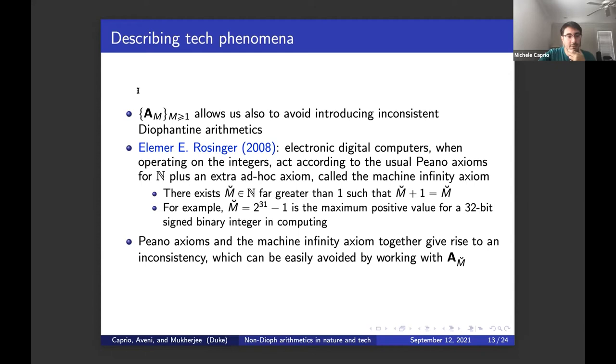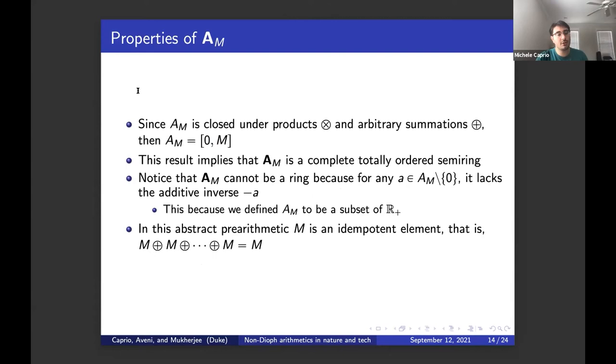Peano axioms and the machine infinity axioms together give rise to an inconsistency, which can be easily avoided by working with the A_M breve element of our class here. So, I hope this is clear, the motivation for why we introduced this class of non-Diophantine arithmetic is clear. This class has also very interesting properties.